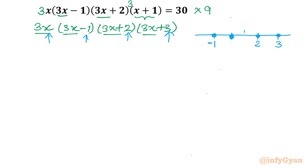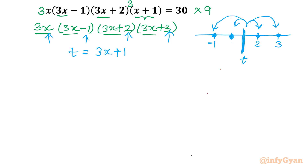If I give a substitution here, see the advantage of this. We have t+1, t+2, t-1, t-2 — so the obvious substitution would be the middle point, the central point, which would be 3x plus 1. So we will give the substitution: let t equal to 3x plus 1.